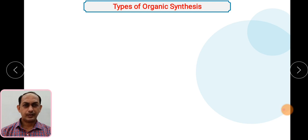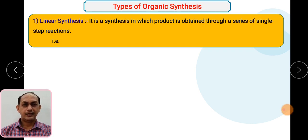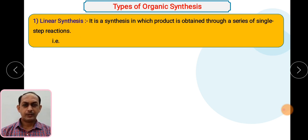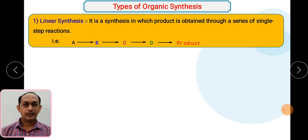We know that synthesis may be carried out in a single-step, double-step, or multi-step process. Based on these steps, synthesis is differentiated into two types. The first is called linear synthesis. Linear synthesis is a synthesis in which the product is obtained through a series of single-step reactions, where each step is converted into the next product.